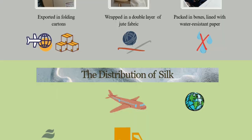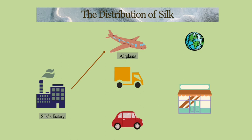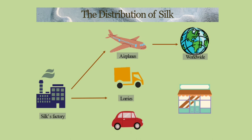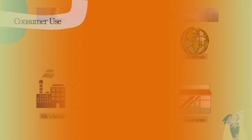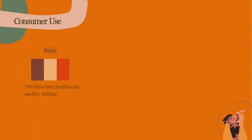The distribution of silk starts from the silk factory where it was made. The silk is distributed by airplanes to be sold worldwide, and lorries and cars are used to deliver it to local stores.